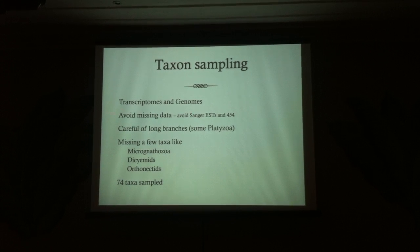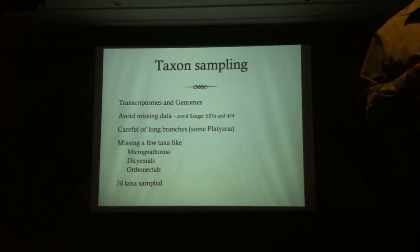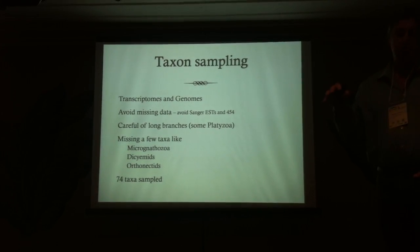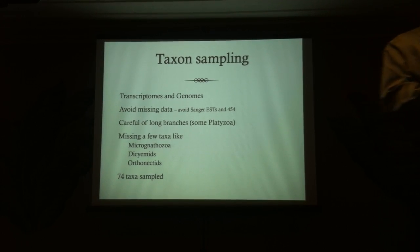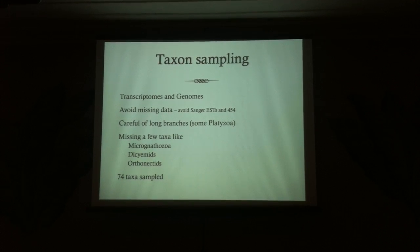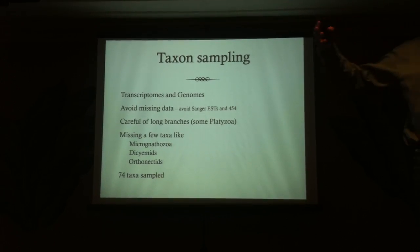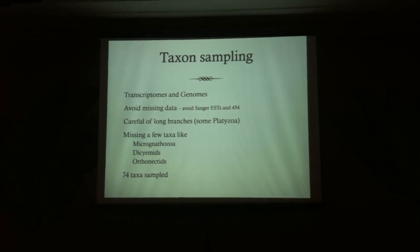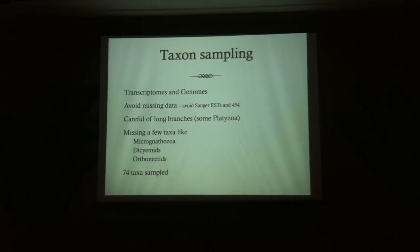One of the big things we've done in picking transcriptomes and genomes is try to avoid taxa with missing data. A lot of previous phylogenomic studies since about 2005 initially used EST-Sanger data sets, then around 2010–2012 you saw a lot of 454 data sets, and now around 2014–2015 you're seeing a lot of Illumina data sets. The Illumina data sets are much deeper, so we've tried to avoid using the EST and 454 data because it's just not as deep as we would like.